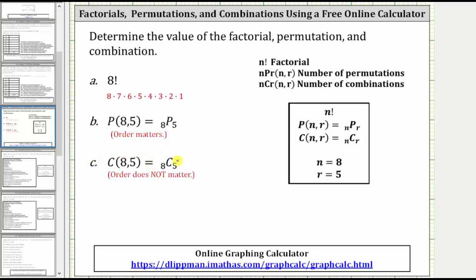Notice there is more than one way to express a permutation and combination. Either way, we need to identify the value of n and r to know how to evaluate on the calculator. In both cases, n equals eight and r equals five.